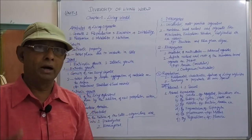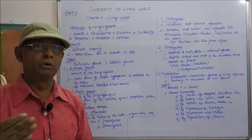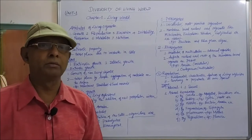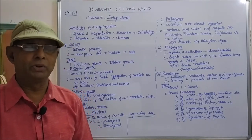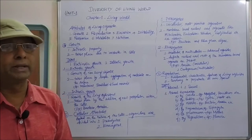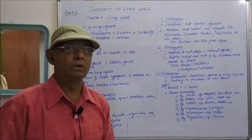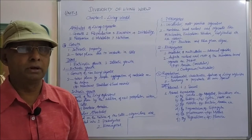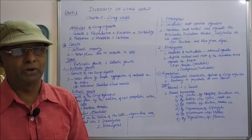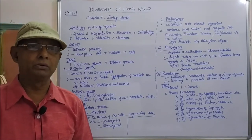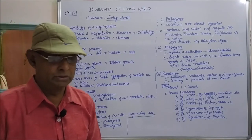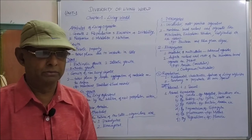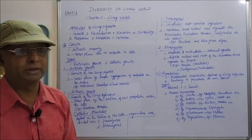Animals will grow only up to a certain age or certain period. For example, in the case of human beings, growth takes place up to around 40 to 45 years. After that, no growth takes place. So that is the definite growth as far as animals are concerned.